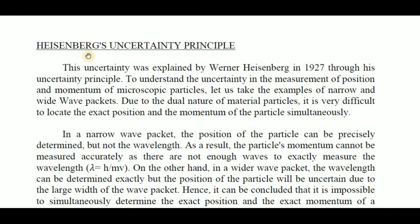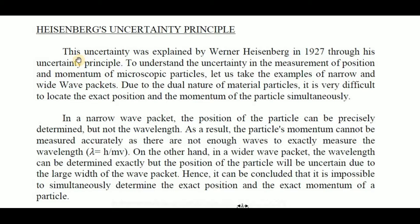Today I am going to discuss Heisenberg's Uncertainty Principle. This topic belongs to the Semiconductors lesson. This uncertainty was explained by Werner Heisenberg in 1927 through his uncertainty principle, to understand the uncertainty in the measurement of position and momentum of microscopic particles — microscopic particles means just like electrons.